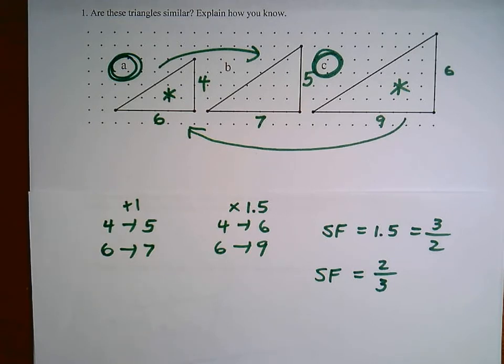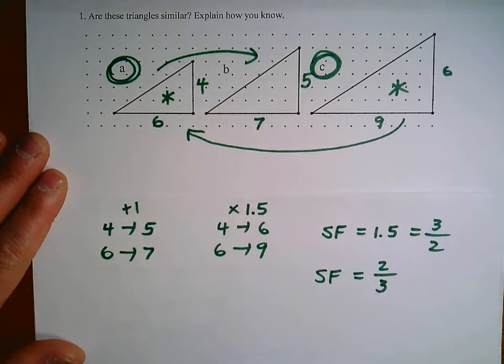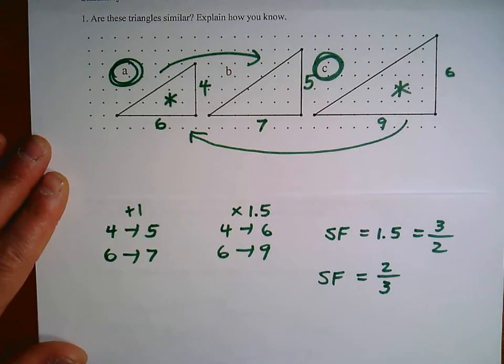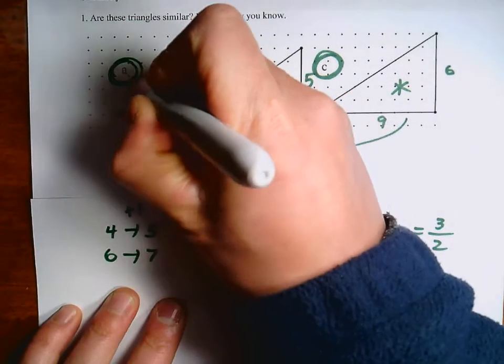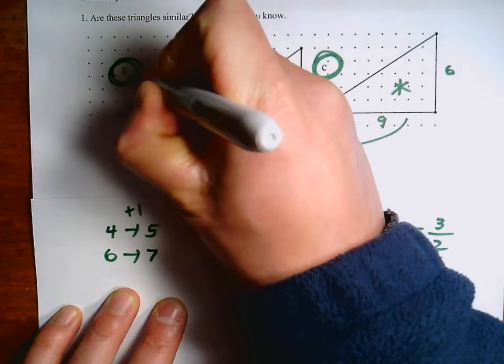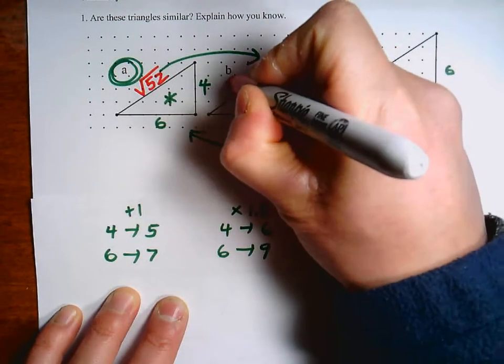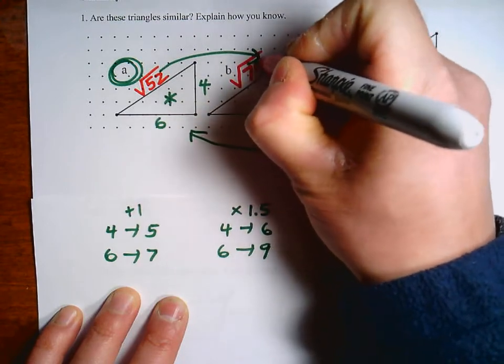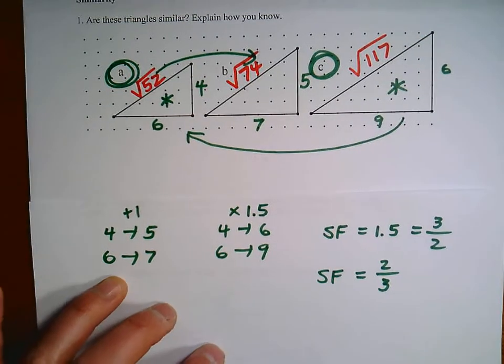Now there's one more thing I want to talk about here, because this talks about the importance of similarity and the fact that it affects all sides. So you'll remember from earlier lessons that you could get the hypotenuse of each triangle. So I'm going to leave the details to you, but I'll write it down here. This one will be square root 52, square root 74, square root 117.